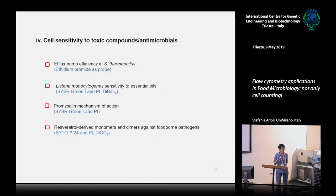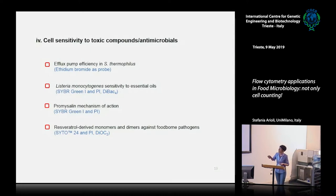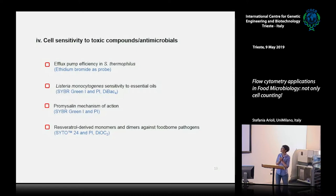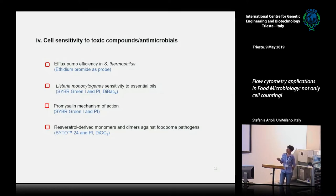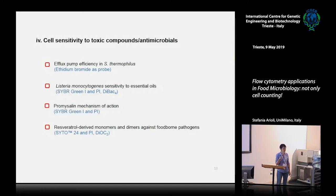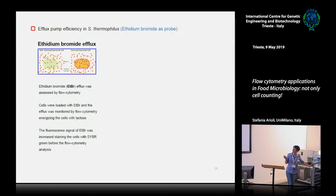Let's move to another application of flow cytometry: assessing cell sensitivity to toxic compounds or testing new antimicrobials. I list several examples: characterizing an efflux pump of S. thermophilus; testing the sensitivity of Listeria monocytogenes against essential oils; assessing the mechanism of action of promisaline; and assessing the sensitivity of food-borne pathogens, especially L. monocytogenes, against resveratrol-derived monomers and dimers.